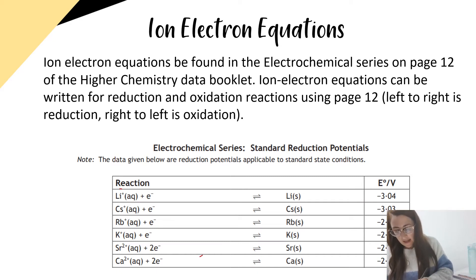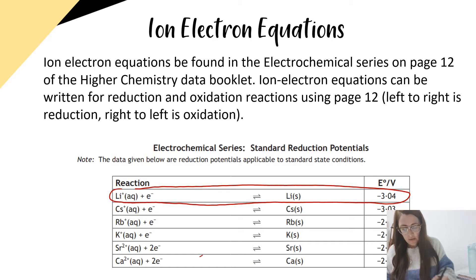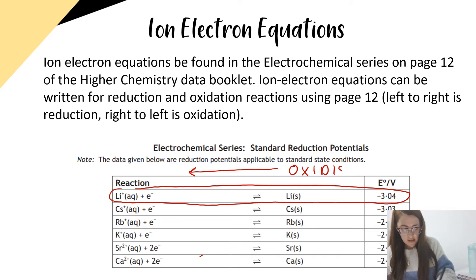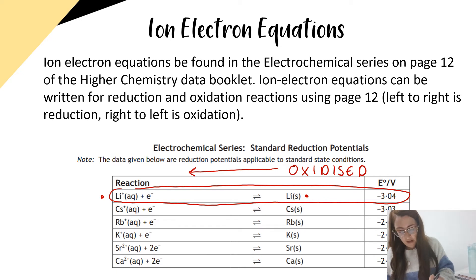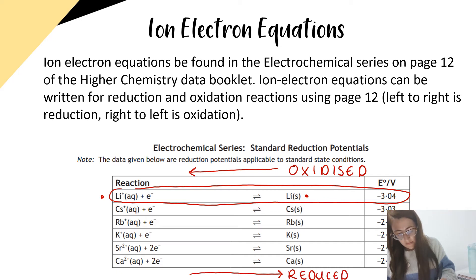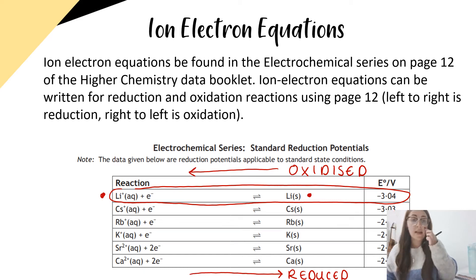For example, if we look at lithium — the top one — reading the equation from right to left, lithium is being oxidised because it's going from lithium solid to lithium plus ions, and it has to lose electrons to do that. If we look at the equations from left to right, these are being reduced. So lithium is going from lithium plus on the left to lithium metal on the right, and it has to gain electrons to do that.